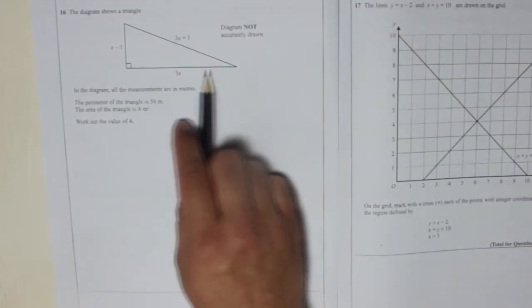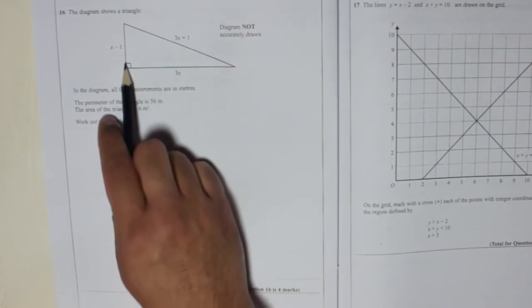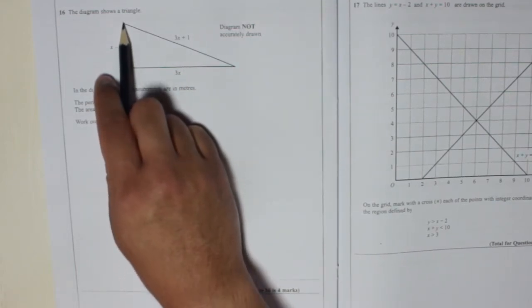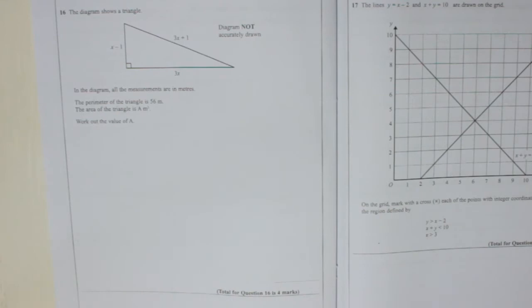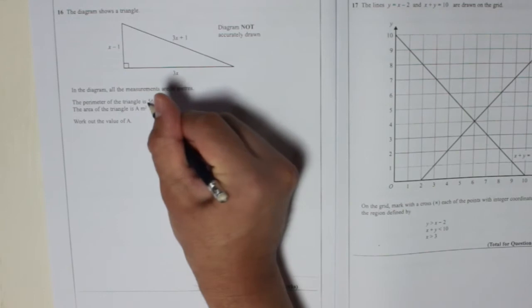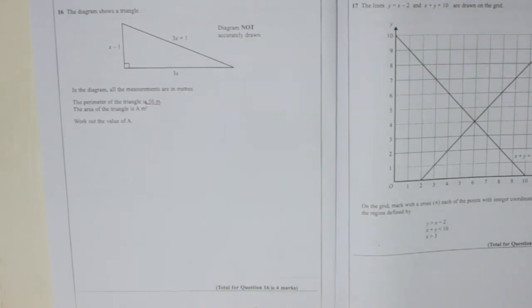So if we know 3x, and we times it by x minus 1, and then we divide by 2 we'll get a. So first of all we need to find out what x is. That's why we use this information, that the perimeter of the triangle is 56 metres.